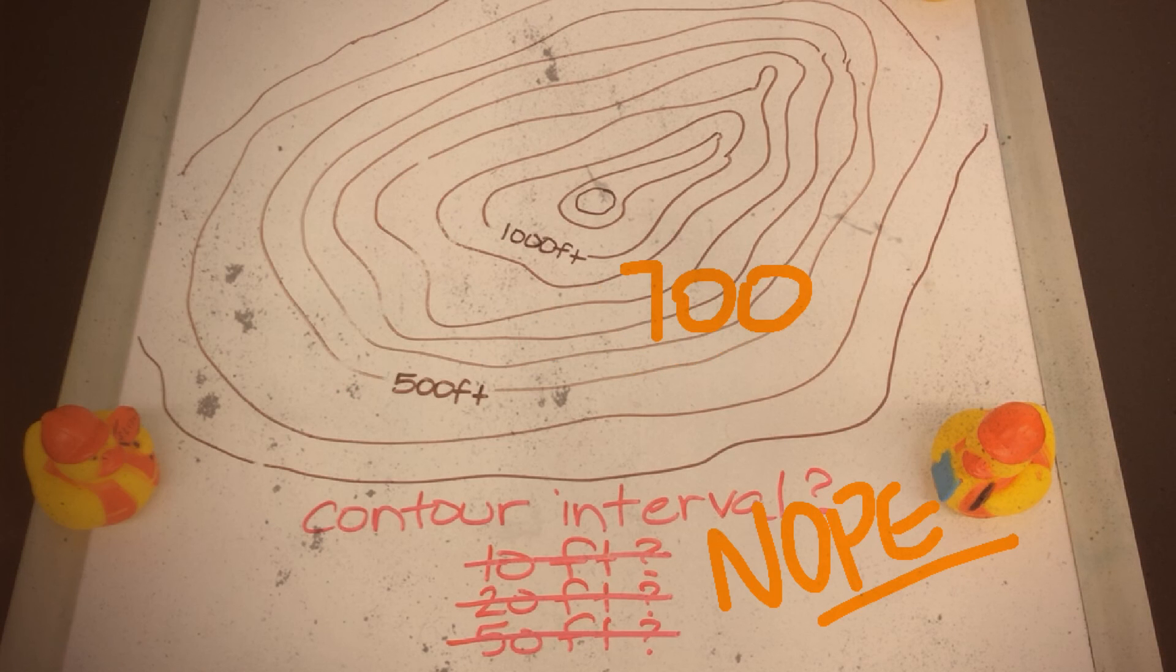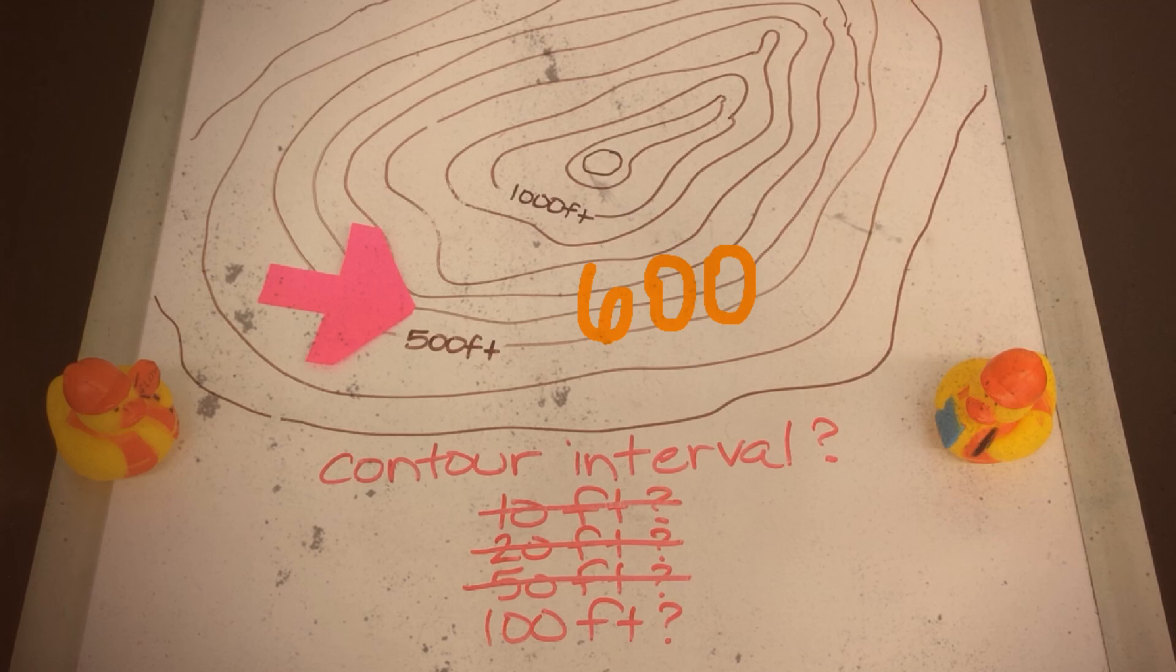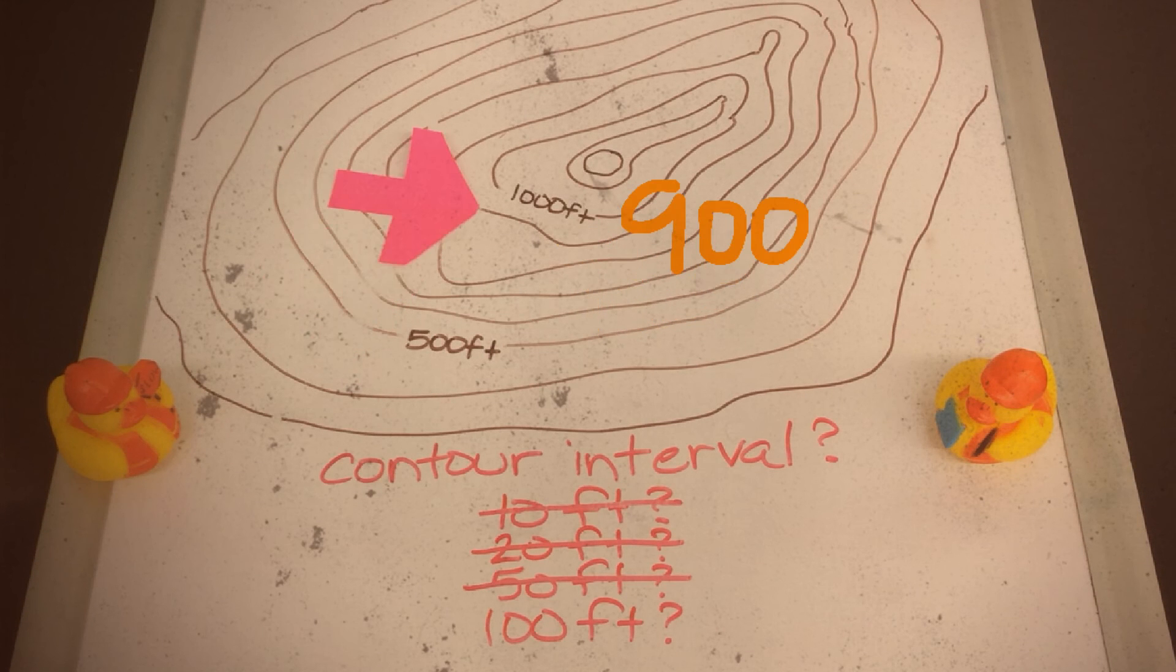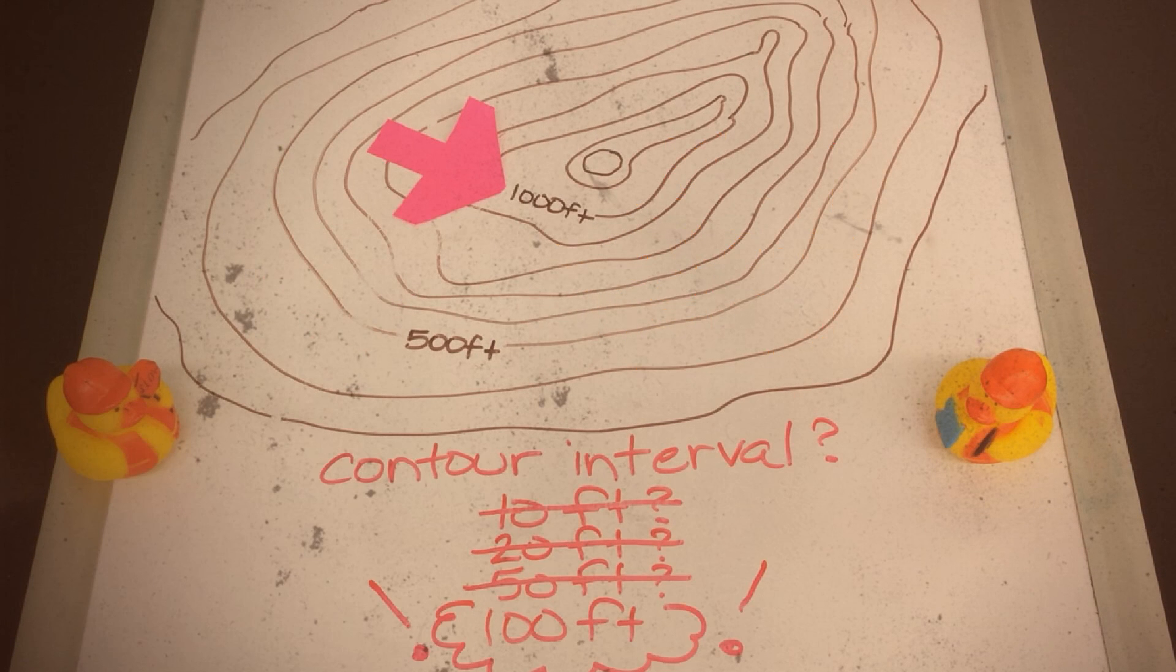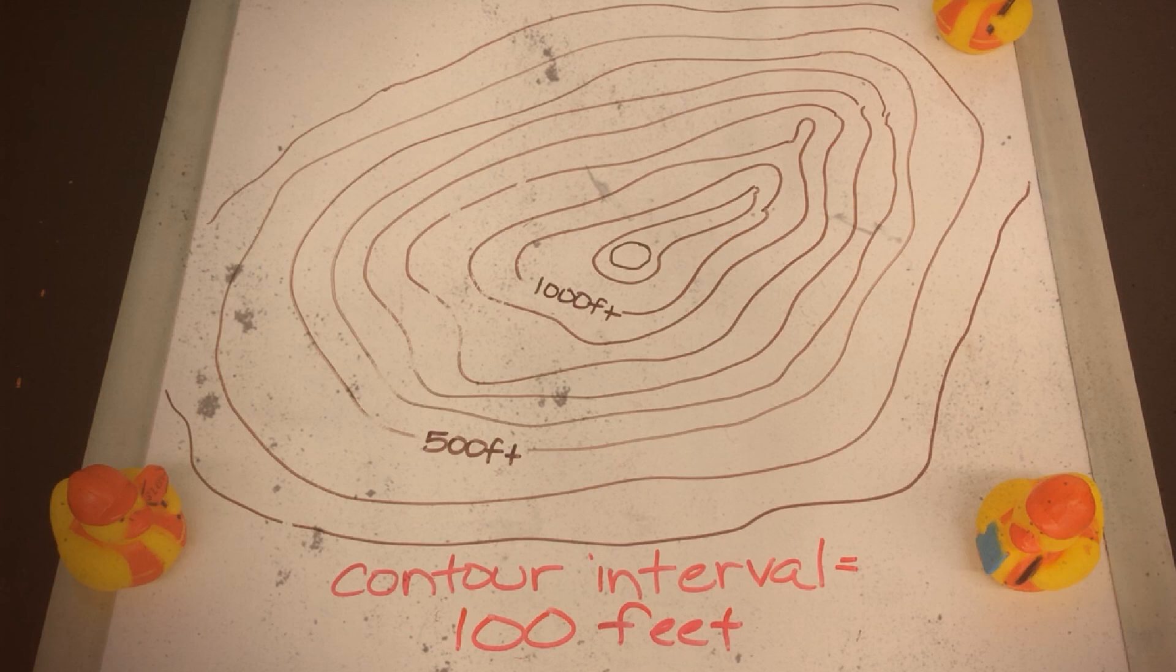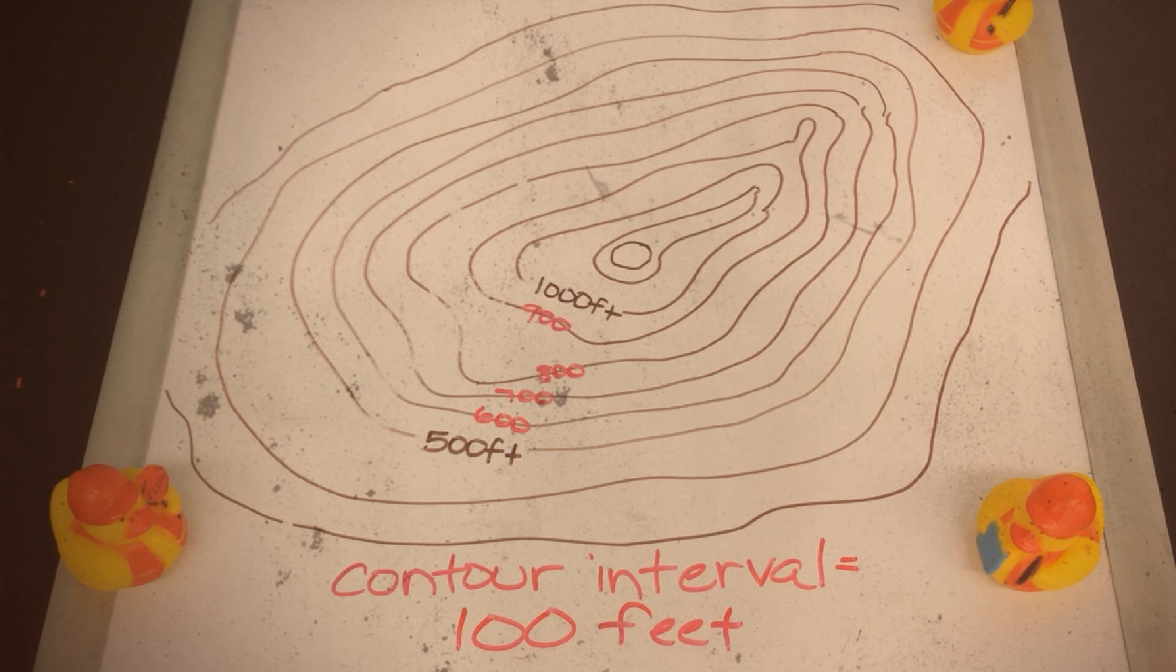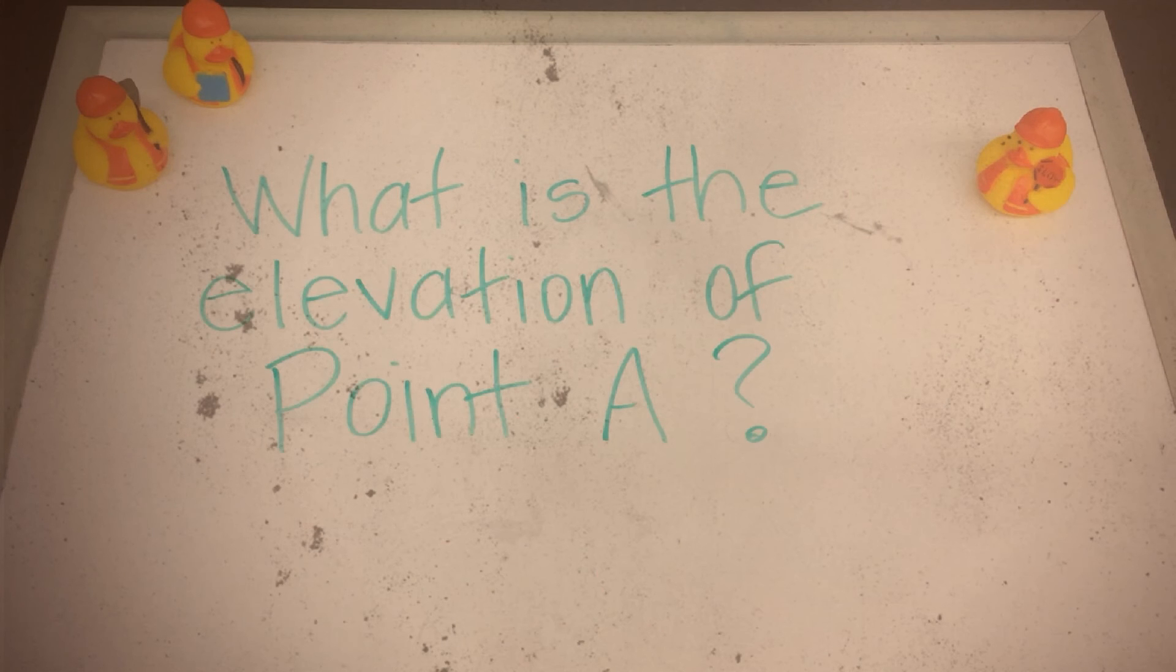Nope. Not 50 either. What about 100? Cross your fingers. Now that we know the contour interval is 100 feet, we label our diagram. Just do it. And let's add a point to the map. What's the elevation of point A?